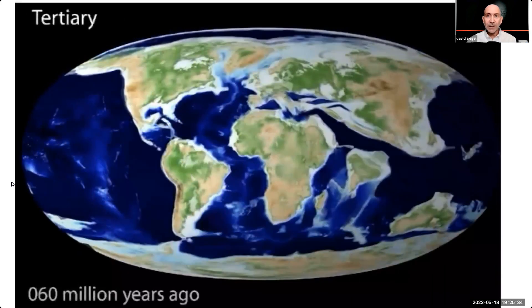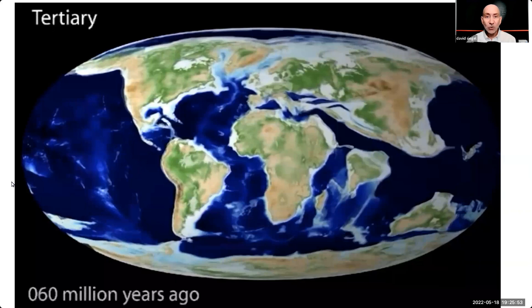60 million years ago, the Atlantic Ocean is starting to open. We can see India racing toward Asia. The water circulates mostly around the mid-latitudes from east to west. The Earth was very hot, around 15 degrees hotter than today, because the equatorial heat had no way to escape via the poles. It was trapped.